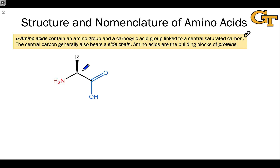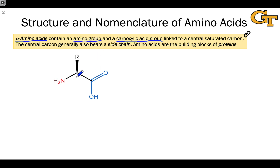The monomer units or building blocks found in proteins are called alpha amino acids. They're carboxylic acids that contain an amino group linked to the alpha carbon of the carboxylic acid.